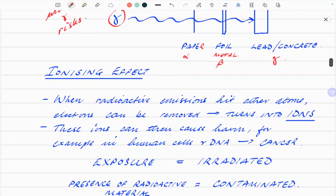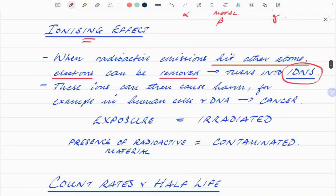And gamma will penetrate both of those and get through to a thick layer, several inches of lead or several feet of concrete. And then gamma is stopped by those. Why is this stuff dangerous or we want to stop it with things is this ionizing effect. That's the actual danger of radiation. When radiative emissions hit other atoms, electrons can be removed. It turns these atoms into ions.